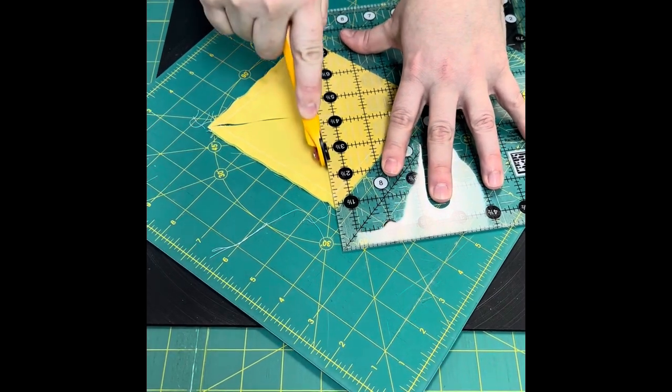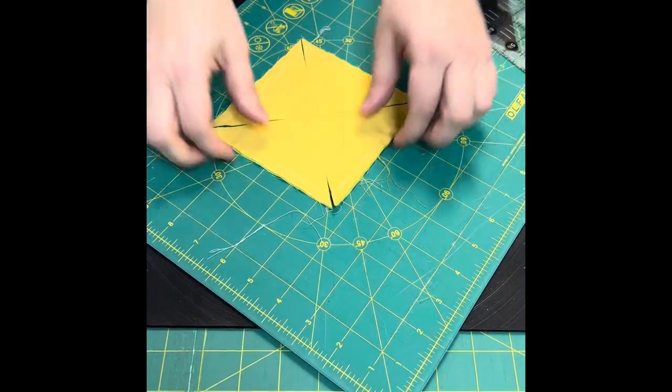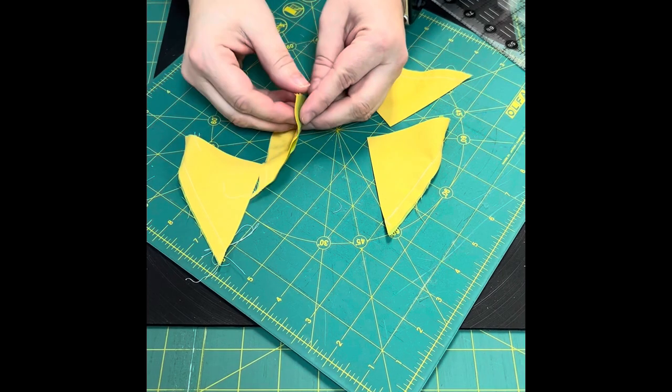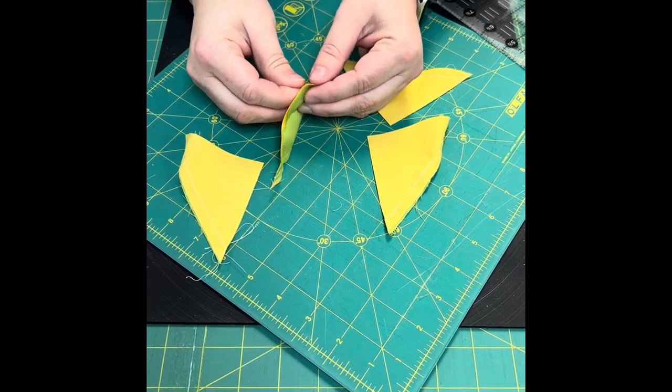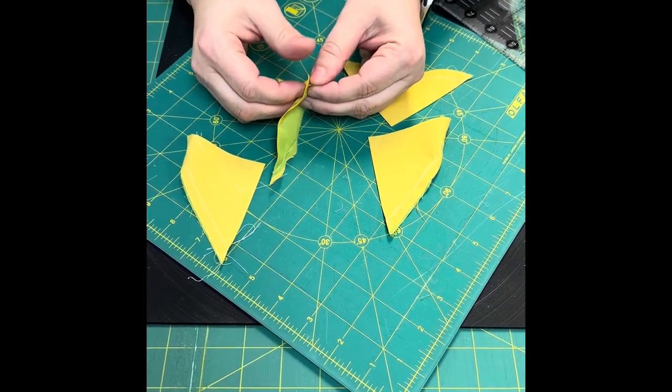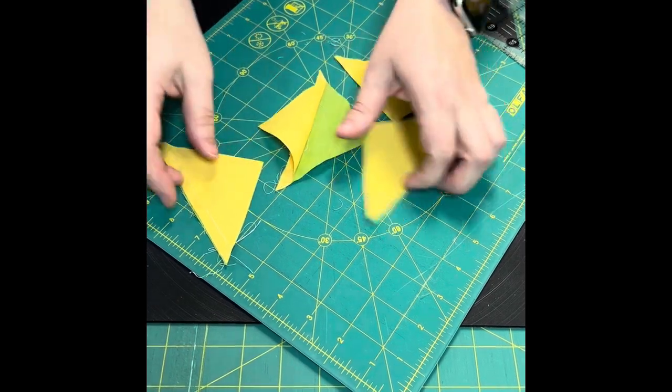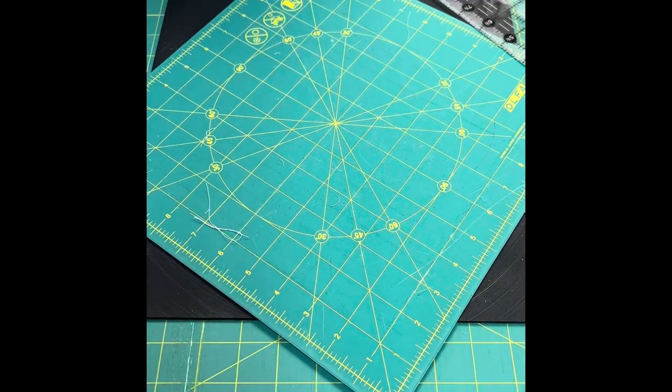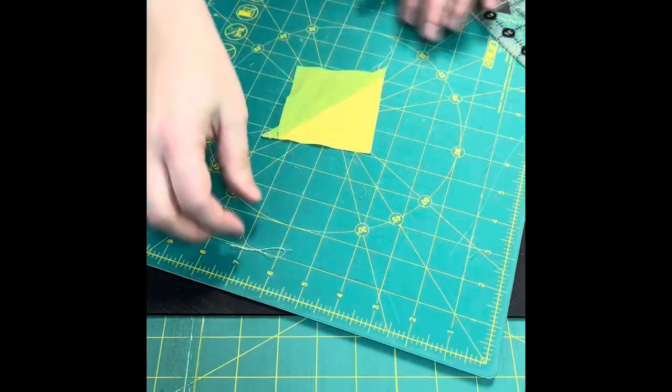Cutting it in the X will give me four half square triangles. This method allows you to make more than two at a time. So now I'm going to go ahead and trim these up to two and a half.